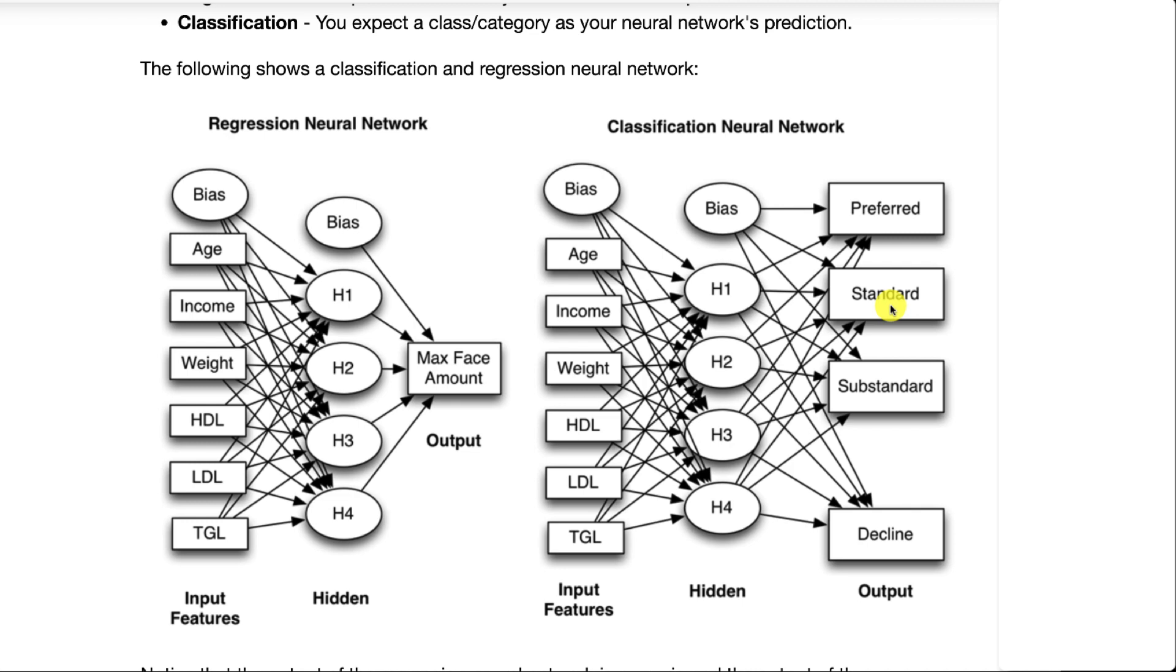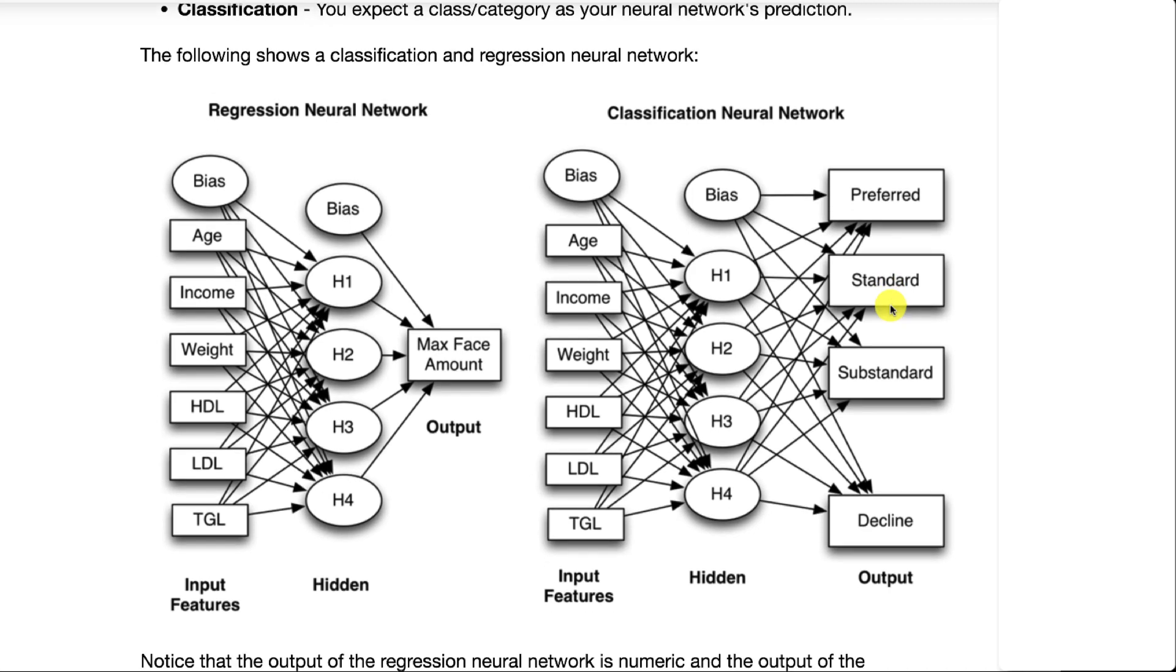You would never have a single class classification neural network because there's just one class, it would always be that class. You have to have at least two classes so there's at least something to differentiate between for the neural network to classify.